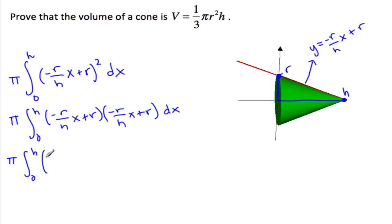This will give us π times the integral from 0 to h of (r²/h² times x² - 2r/h times x + r²) dx.